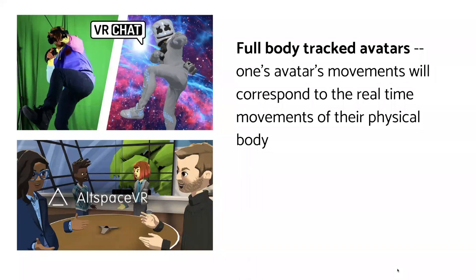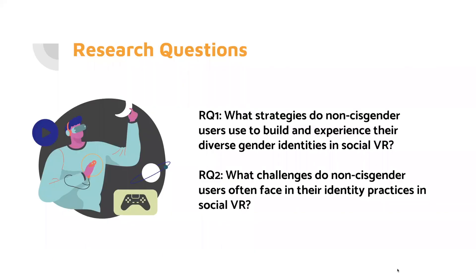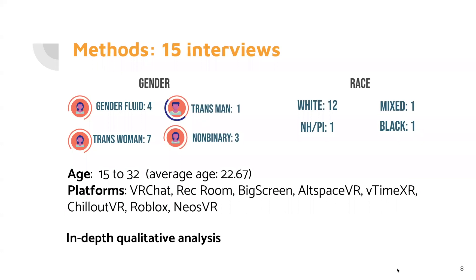Using such avatars, social VR users can conduct and enjoy real-life social activities in a highly realistic simulated 3D virtual environment. However, despite identity becoming a growing research agenda in social VR scholarship, still little is known regarding non-cisgender users' unique experiences of understanding and presenting their identities in these emerging novel social spaces. Therefore, this research gap motivates us to investigate two research questions: What strategies do non-cisgender users use to build and experience their diverse gender identities in social VR? And what challenges do non-cisgender users often face in their identity practices in social VR?